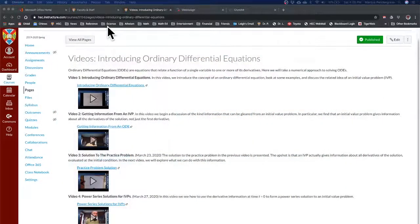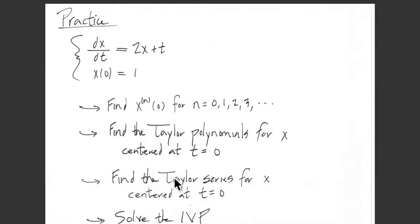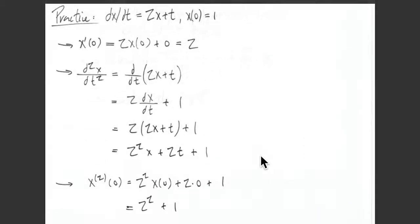The practice problem was to look at this initial value problem and first extract the derivative information at the initial time t = 0 for all orders of derivatives of the solution. Then use that information to find the Taylor polynomials and Taylor series for the solution. Finally, see if we could use the Taylor series to come up with a closed form solution — the Taylor series itself is a solution, but often we'd like to see it in closed form.